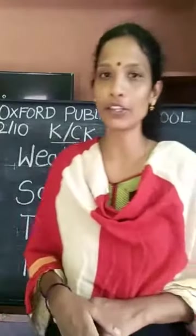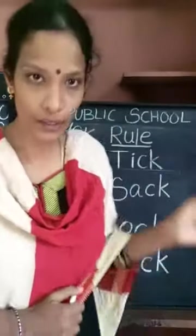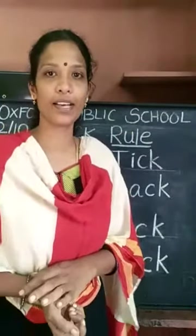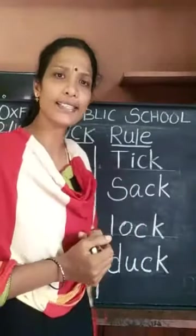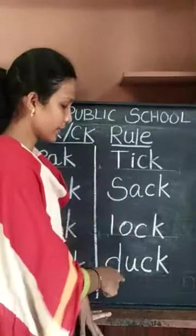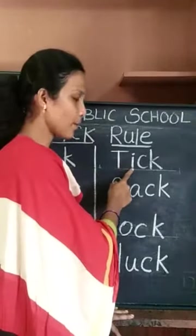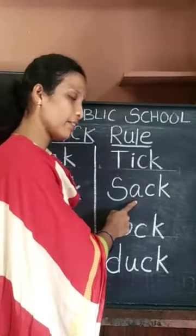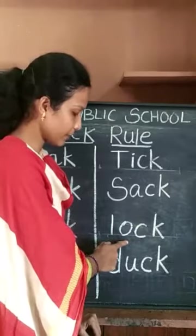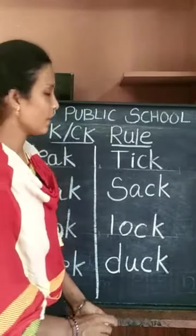I hope you have understood where to write K. Now we are going to see where to write CK. It's very easy. Children, see — in these words, how many vowels do we have? We have one vowel in the first word, one vowel in the second word, one vowel in the third word, and one vowel in the fourth word.